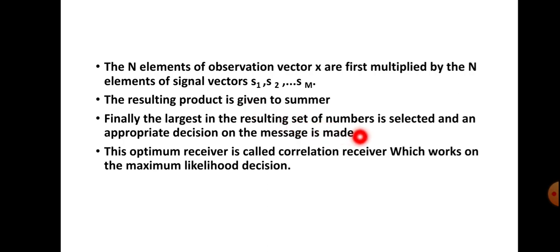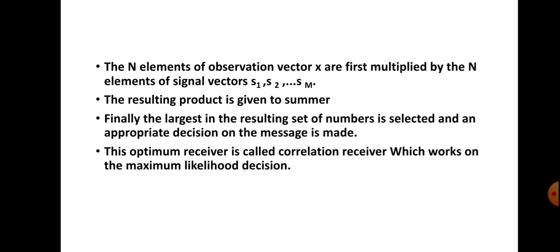The largest in the resulting set of numbers is selected and an appropriate decision on the message is made. This optimum receiver is called the correlation receiver, and it works on the maximum likelihood decision rule.